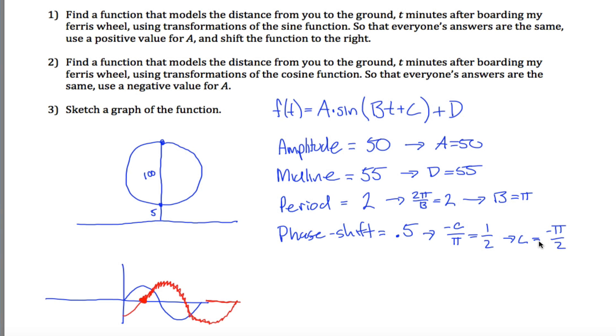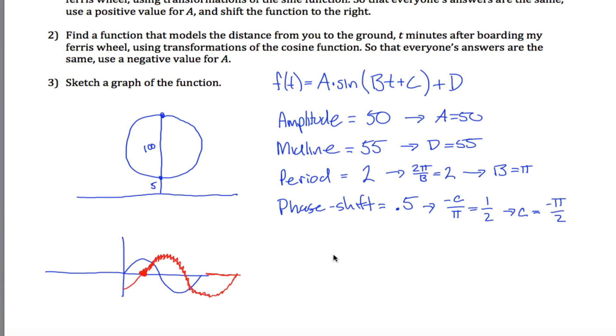So this would be my phase, or this would be my value of C is negative pi over 2. And so all I have to do is copy this with these values in there. I say I got 50 times the sine of B, which is pi, times T, plus C, but C is this negative number, so I got plus negative pi over 2 plus D, so I get 55.